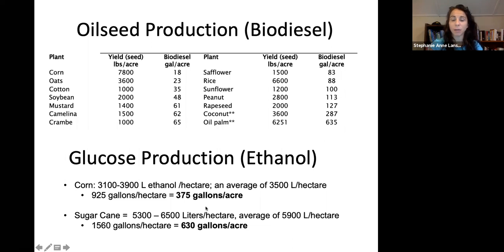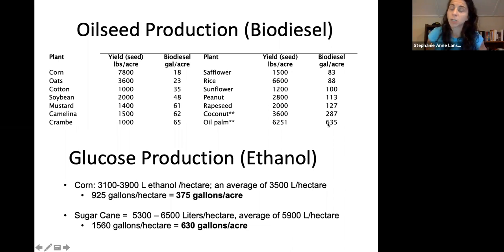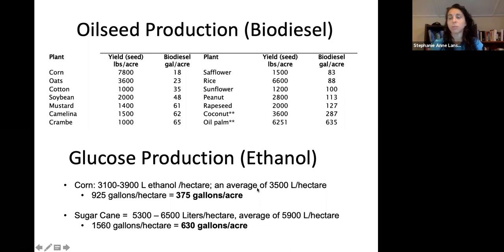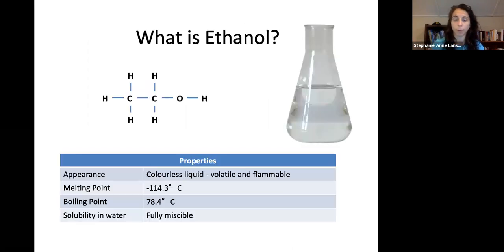These values are comparable to some of the highest biodiesel yields per acre, with sunflower and rice around 100 gallons per acre, and palm oil being the highest at over 600 gallons per acre — very close to what sugarcane produces — in terms of how many acres you need to plant to get your fuel output.